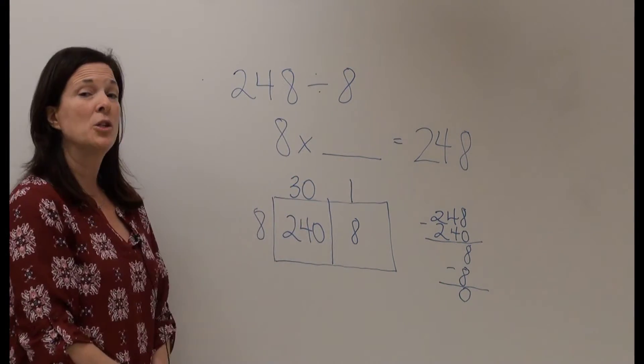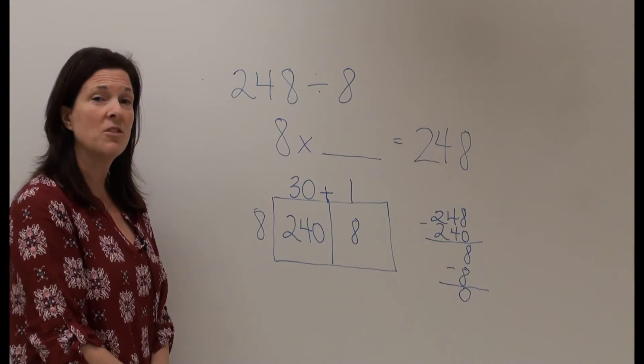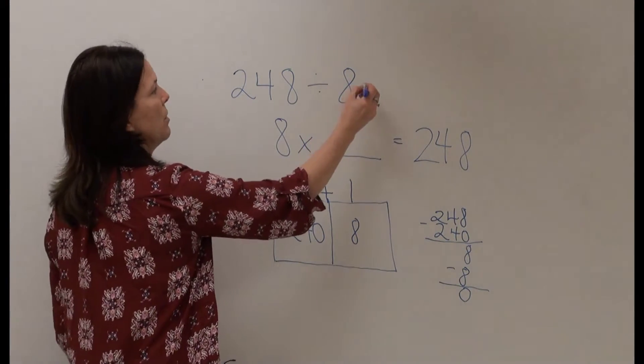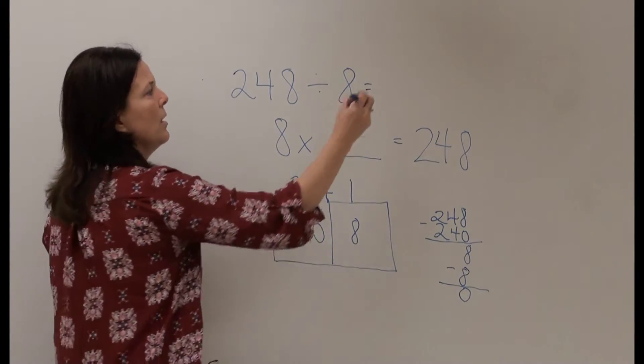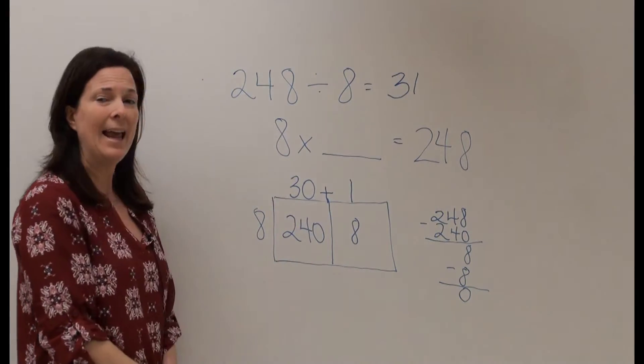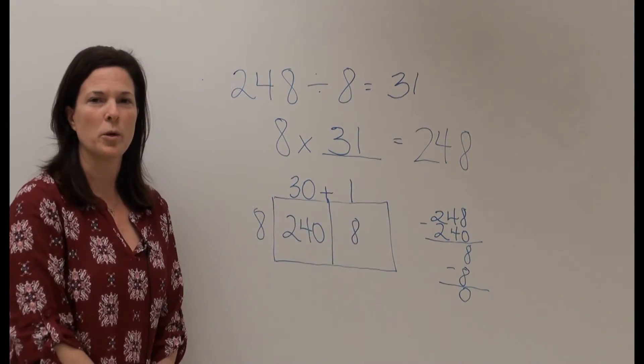So I'm going to add my two factors 30 plus 1 which gives me 31 rows. So 248 divided by 8 equals 31 and 8 times 31 equals 248.